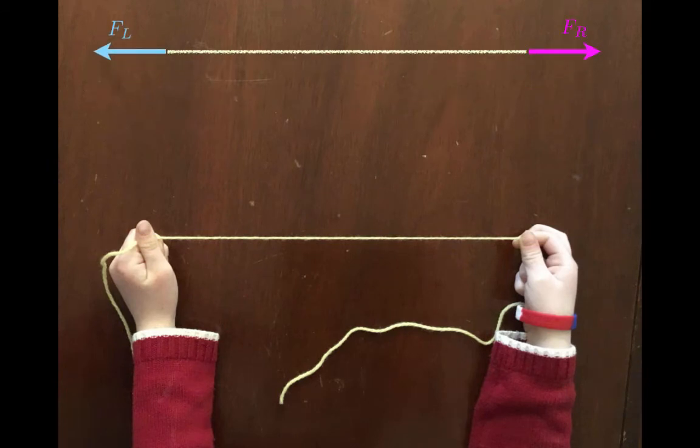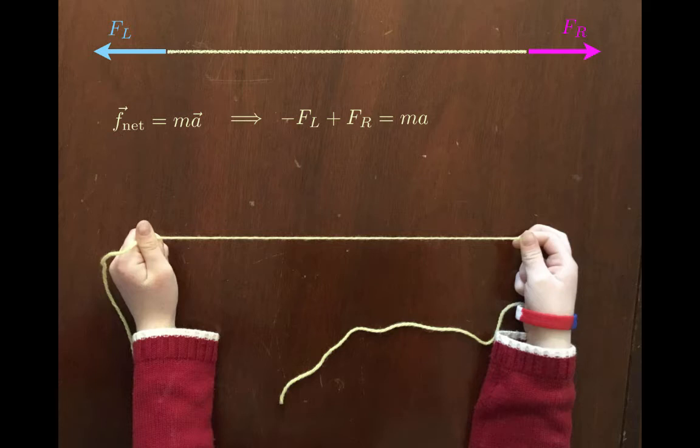Let's isolate the string and use Newton's second law, F equals ma. Negative FL plus FR is equal to ma. Now take a moment to think about what the mass of the string might be. Most of the time the string will have a very tiny mass compared to the rest of the system, so we just say that the mass is equal to zero and that means that FL is equal to FR. These aren't an action-reaction pair as in Newton's third law, but they are equal and opposite.